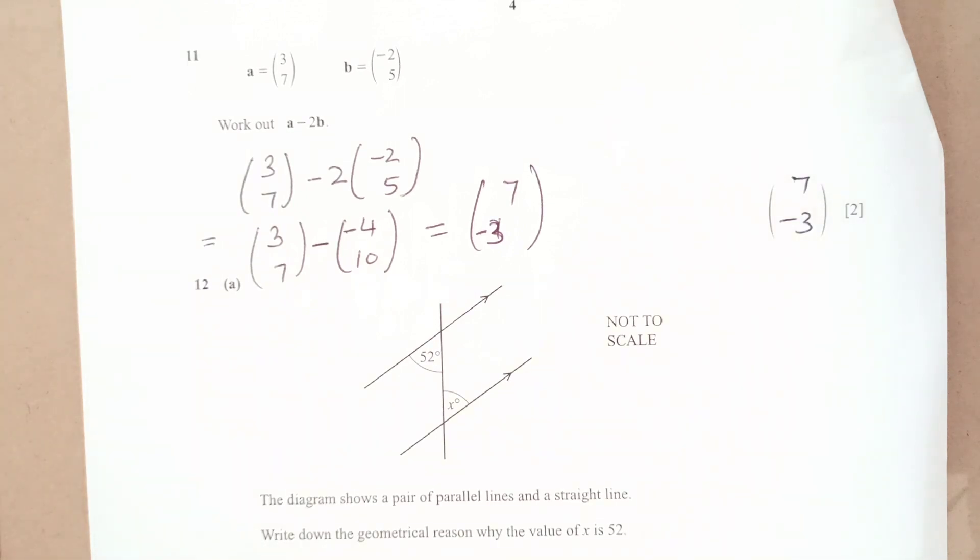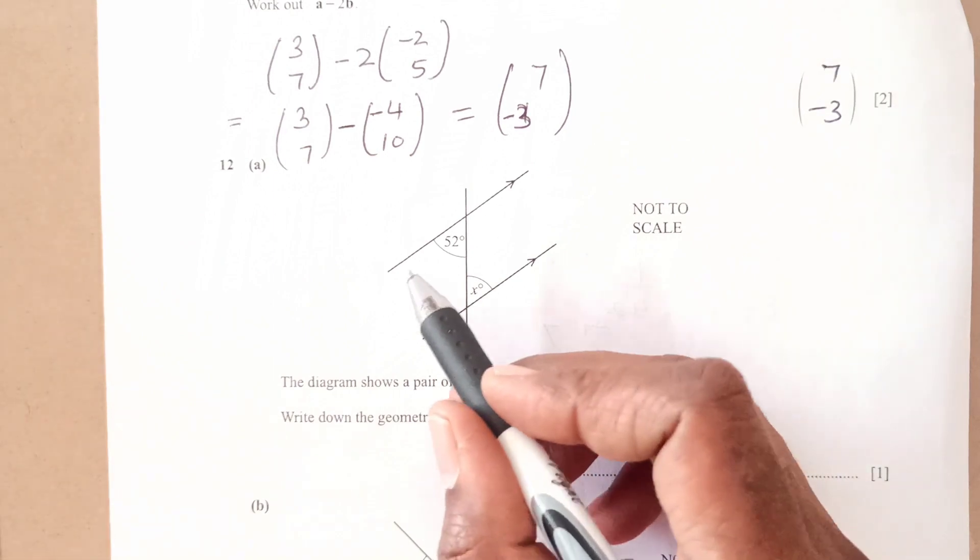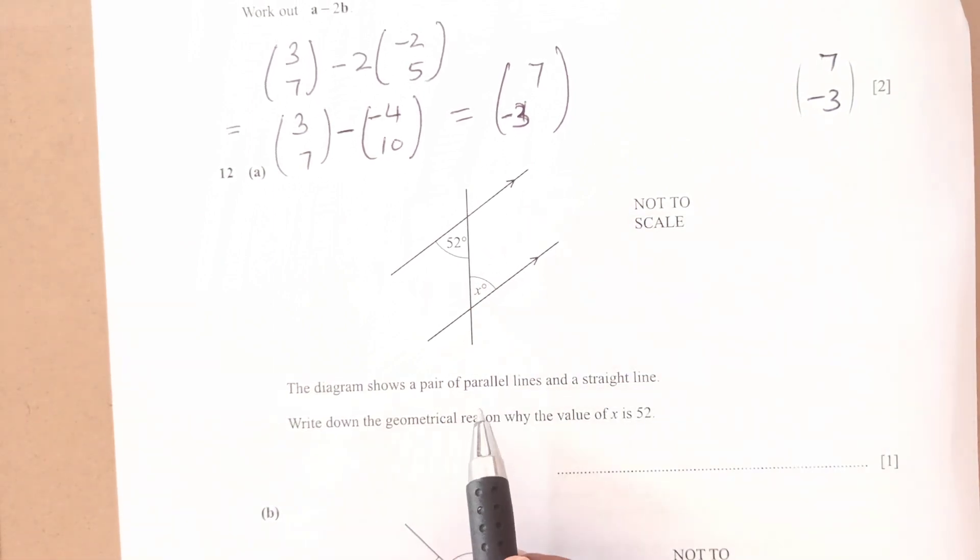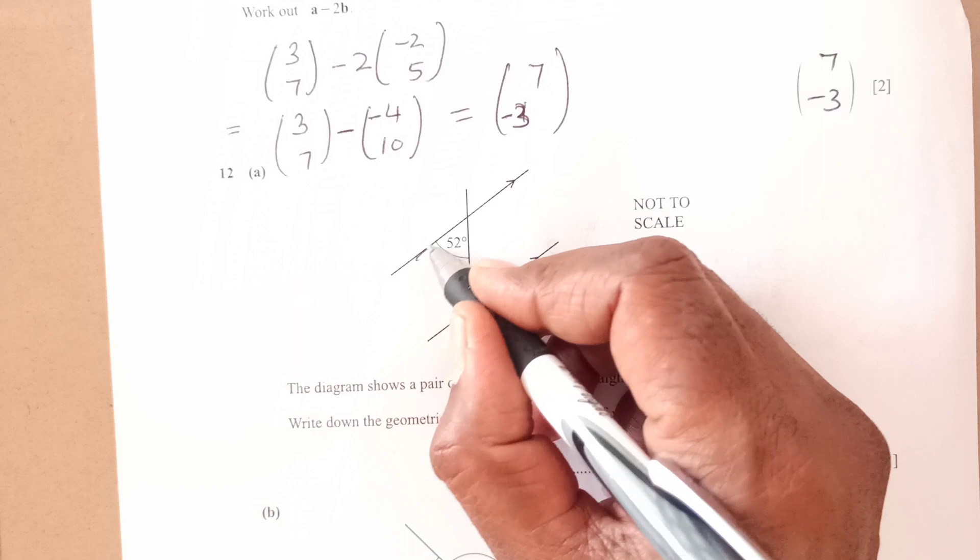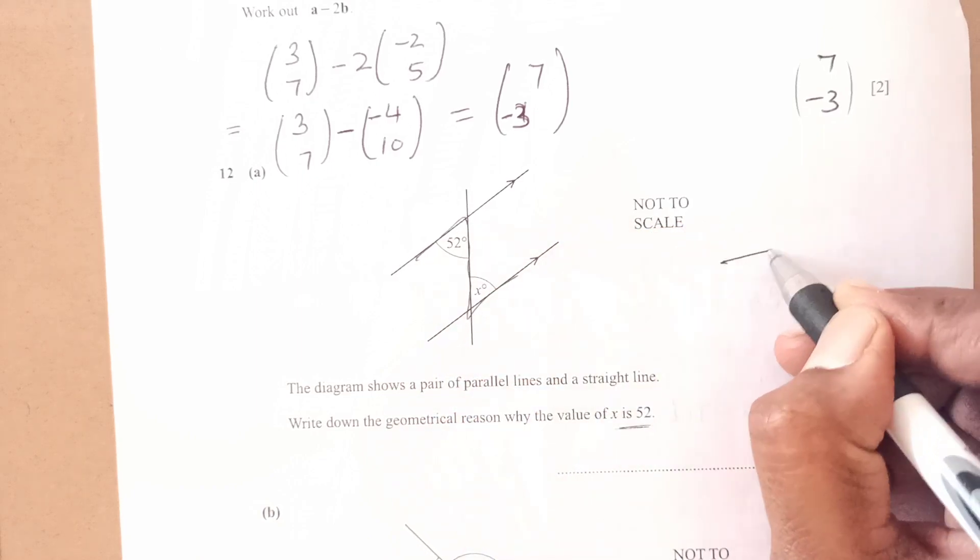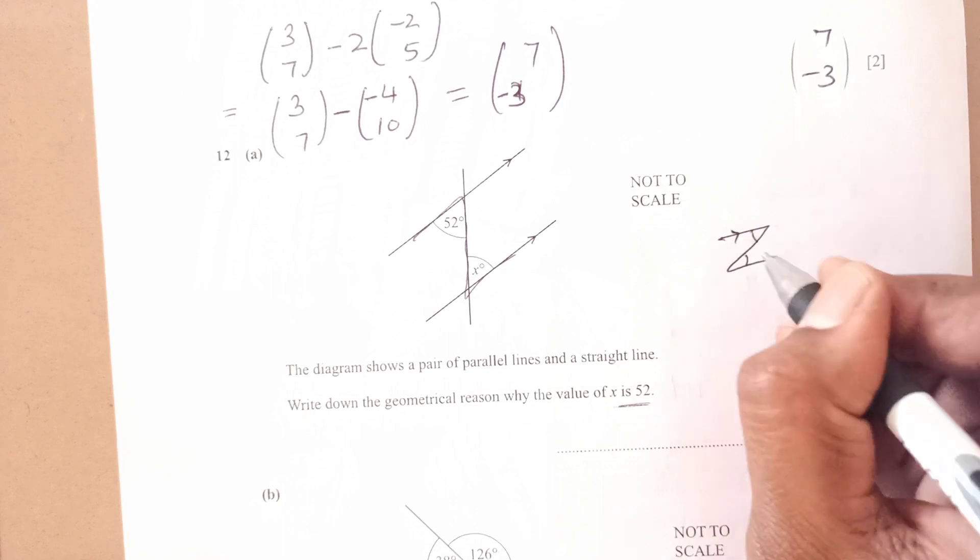Now look at number 12. So we have two parallel lines here and the diagram shows the pair of parallel lines work out write down the geometrical reason why the value of x is 52 because they are alternate. When you see the z shape like this, this angle and this angle is alternate if the lines are parallel.